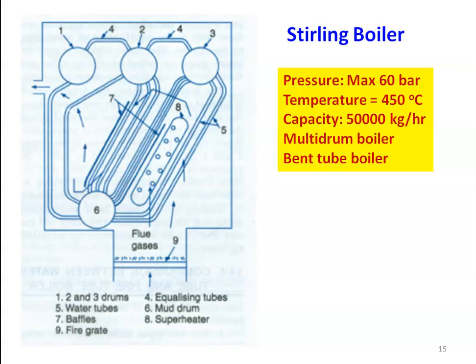The next boiler is the Stirling boiler, which is also a water tube boiler. It is called a multi-drum bent tube boiler. The maximum pressure is 60 bar and the temperature is around 450 degrees Celsius. The capacity of the boiler is 50,000 kilograms per hour — it can produce 50,000 kilograms per hour of steam.